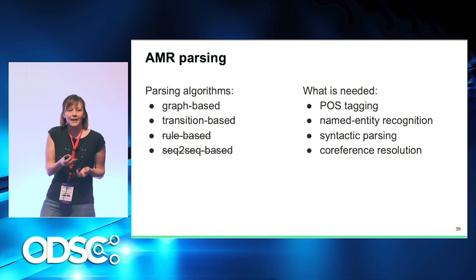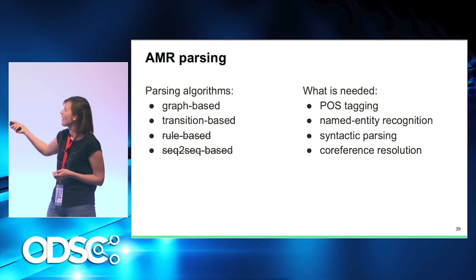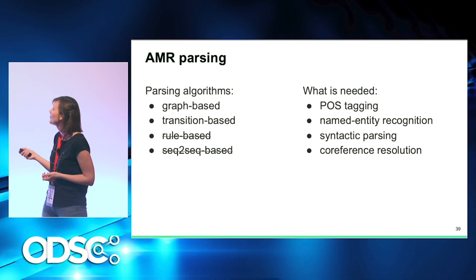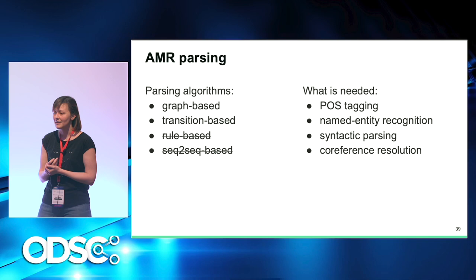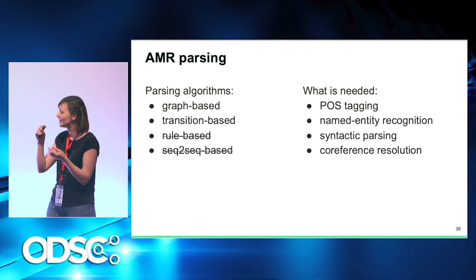There are a couple of AMR parsing algorithms. We're going to discuss graph-based and transition-based algorithms, the same types as in syntactic parsing. Rule-based parsing for AMR is not very efficient — it's easier to get this information from data than to write rules. Sequence-to-sequence-based approaches haven't shown good results yet, presumably because of the very complex data structure.